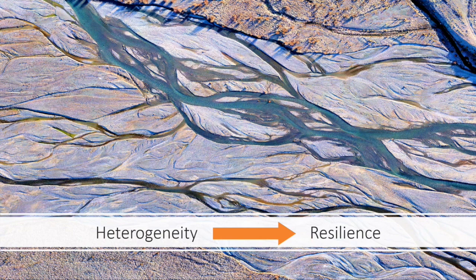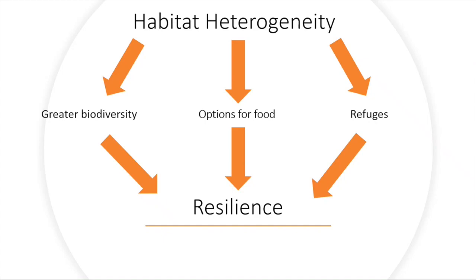What I mean by resilience is that after a disturbance — something like a flood — those properties of the ecosystem that we care about bounce back. You might have a population of birds disappear in a flood, but they can come back afterwards, and it still looks like a braided river with all those properties we link to braided rivers. Things like environmental variation, more biodiversity, options for food for mobile consumers, and refuges during floods all contribute to total ecosystem resilience.